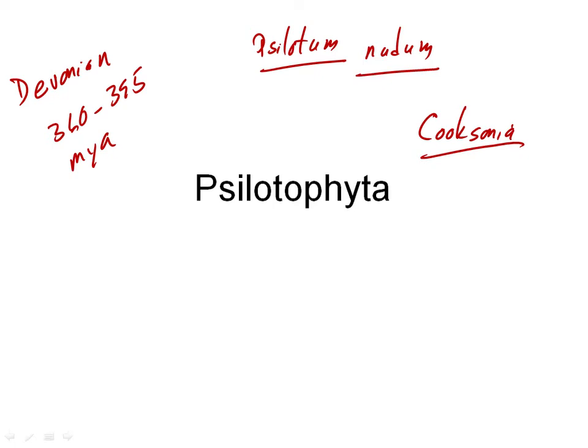These are some of the first vascular plants — the first land plants that had a vascular system in them. Maybe we should really be doing them before the Lycophyta, but they got switched this way some years ago. So we're doing the Psilotophyta second, even though in some ways they are the more primitive plants, with more primitive characteristics than the Lycophyta.